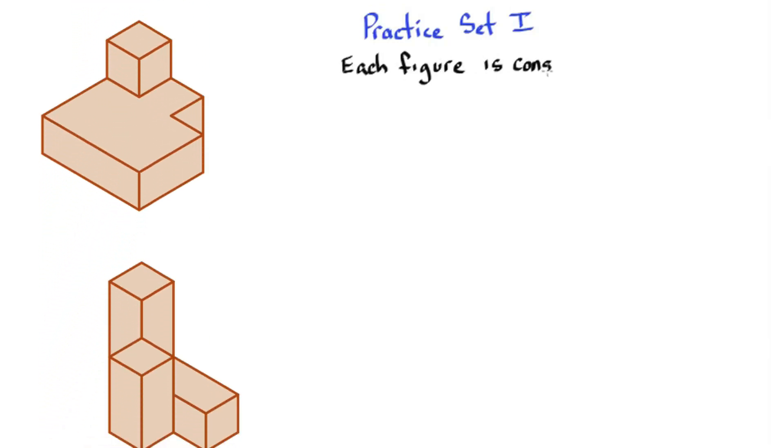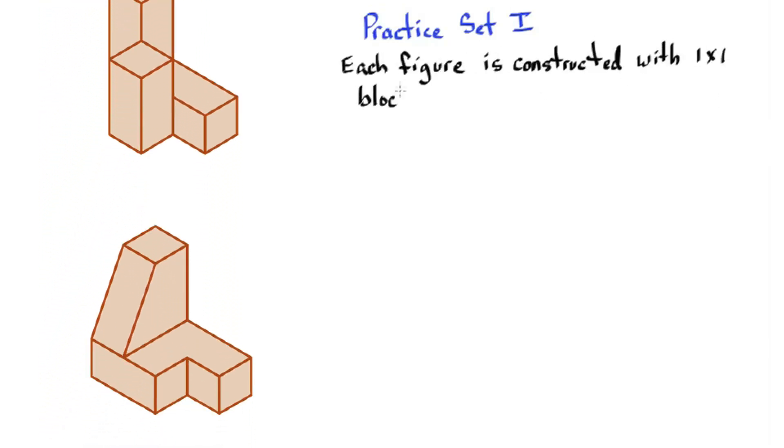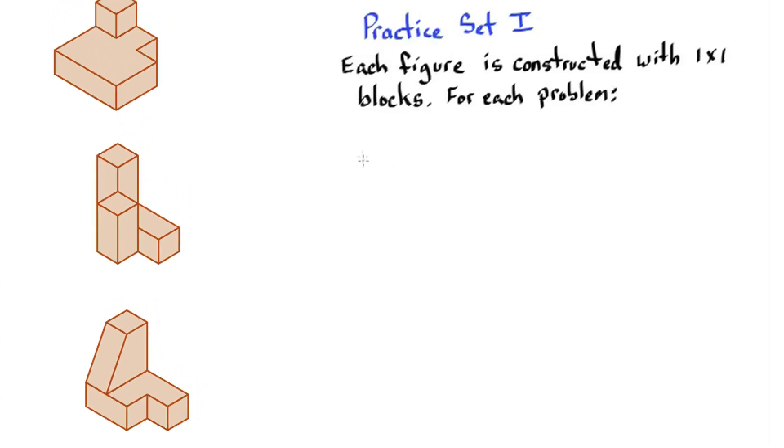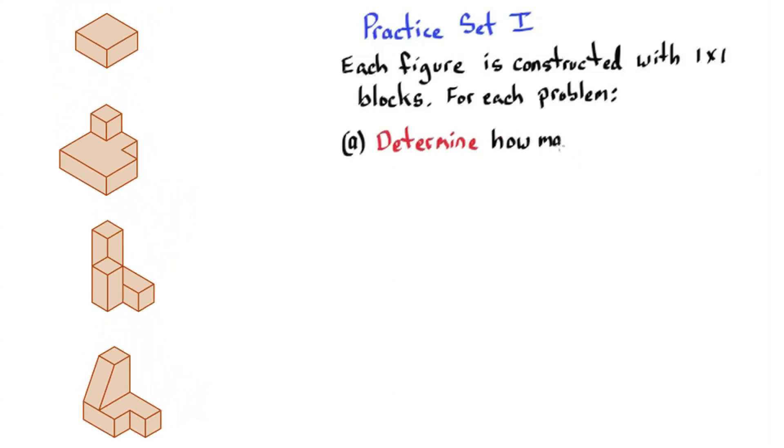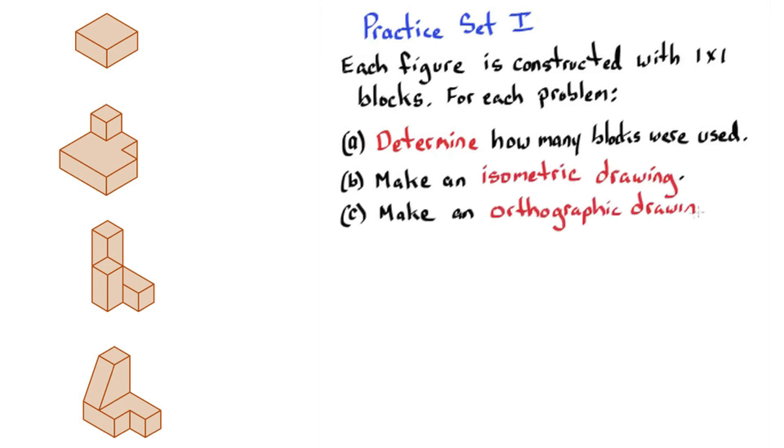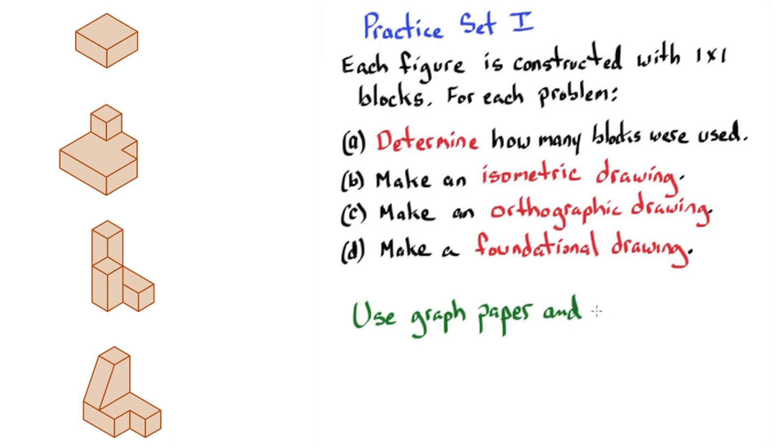Okay, so we're ready for some practice problems. Practice set one. Each figure is constructed with one by one blocks. For each problem, determine how many blocks were used, make an isometric drawing, make an orthographic drawing, make a foundational drawing. Use graph paper and a straight edge. Be neat.